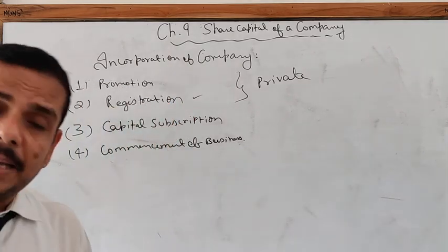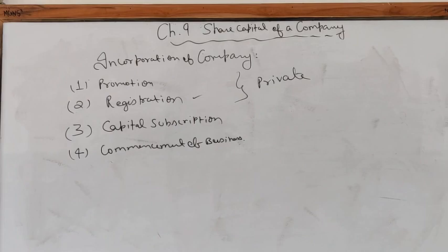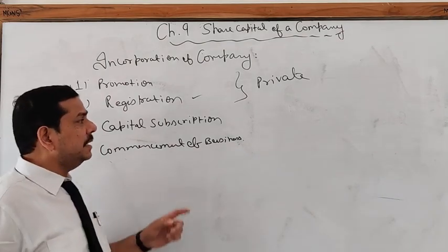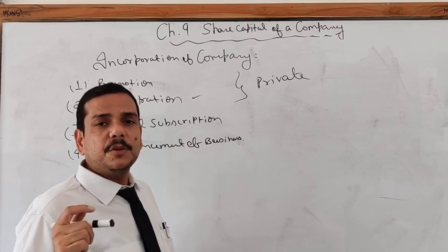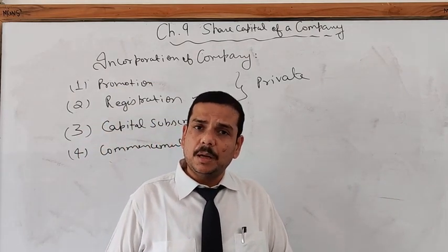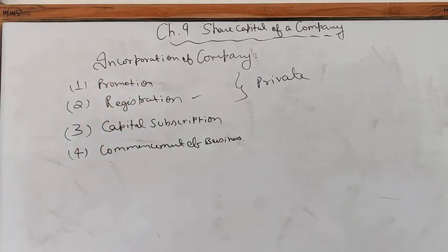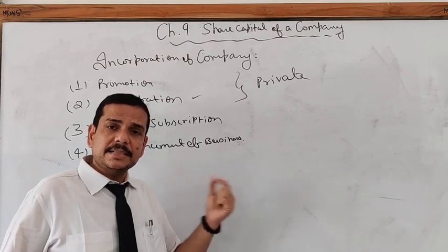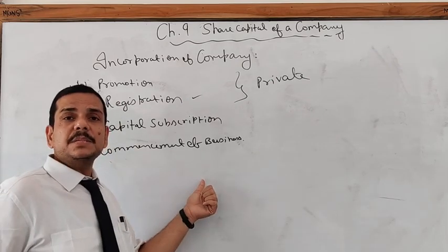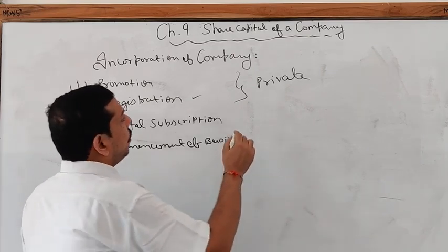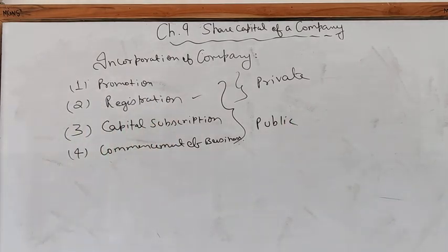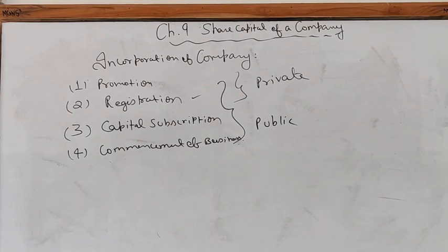A private company is not supposed to invite capital from the public; it arranges capital on its own. So just after registration, a private company can start its work. For a public company, which collects capital from the public, the third stage is capital subscription — preparing a prospectus and advertising. When all necessary conditions are complied with, the Registrar gives a certificate of commencement of business. So private companies need only the first two steps, while public companies need all four steps.